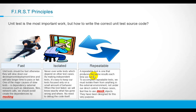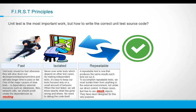The fourth principle is self-validating. Each test must be able to determine whether the output is as expected or not. It must be self-determined.